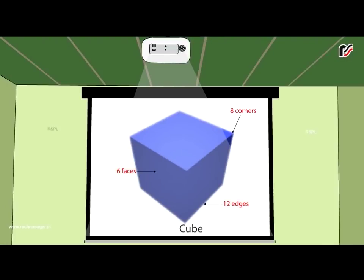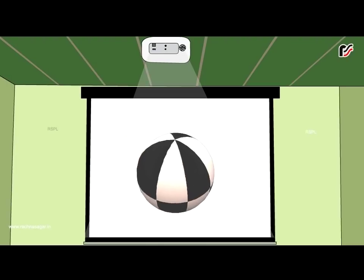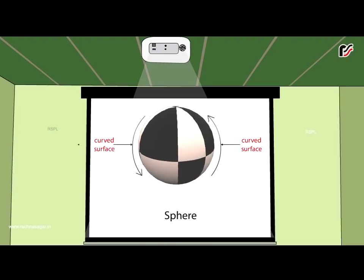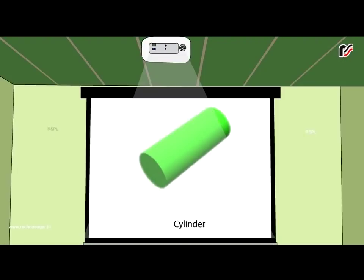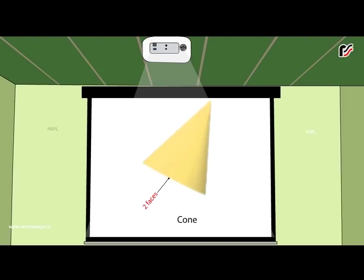This is a sphere. It has one curved surface. This is a cylinder. It has three faces, one curved plus two circular, and two edges. This is a cone. It has two faces, one edge and one corner.